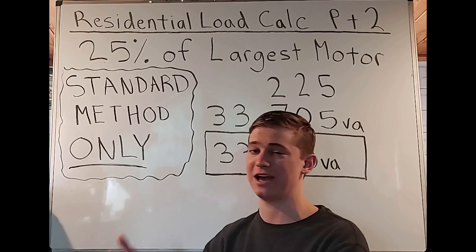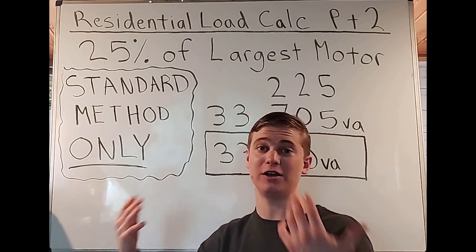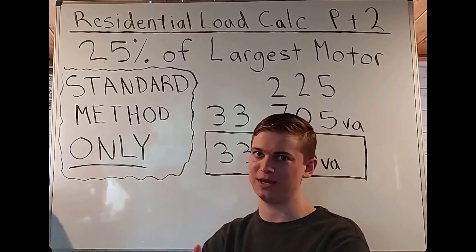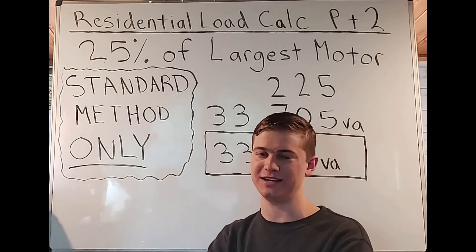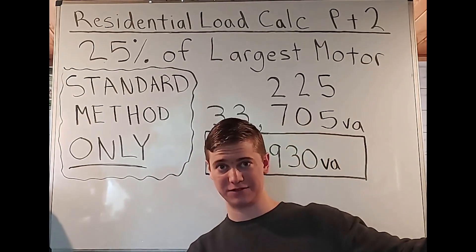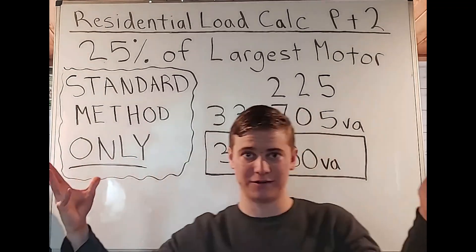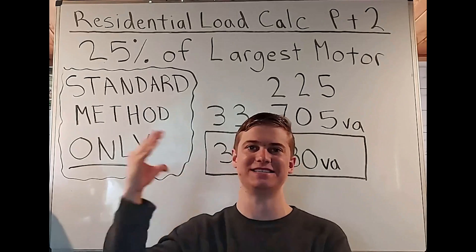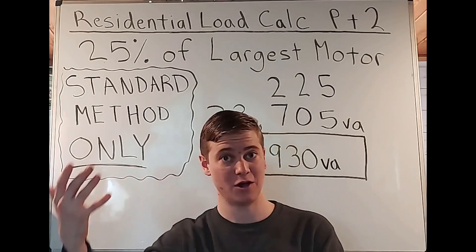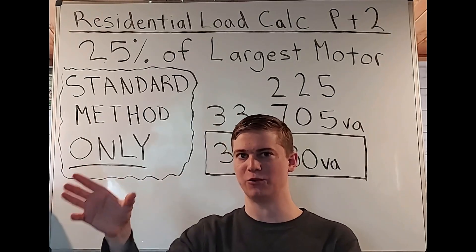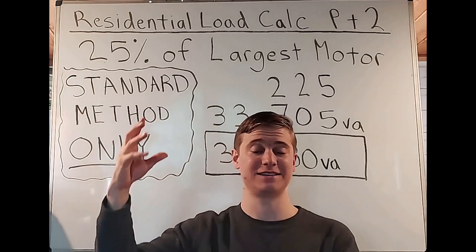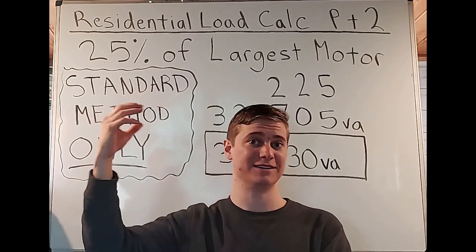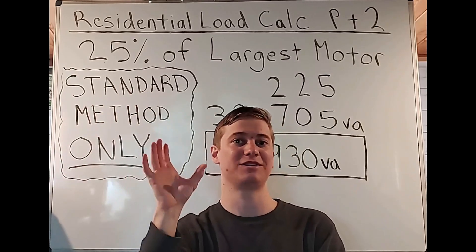All you're going to do is look at your appliances, not including your dryer and your range, of course, because those are separated in the calculations explained in that last video. But other than that, the other fixed appliances in the house are the appliances with a dedicated circuit home run. We're going to look at those and we're going to take the one that has the largest motor.